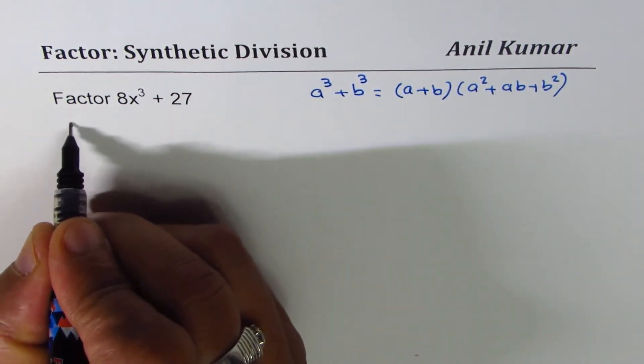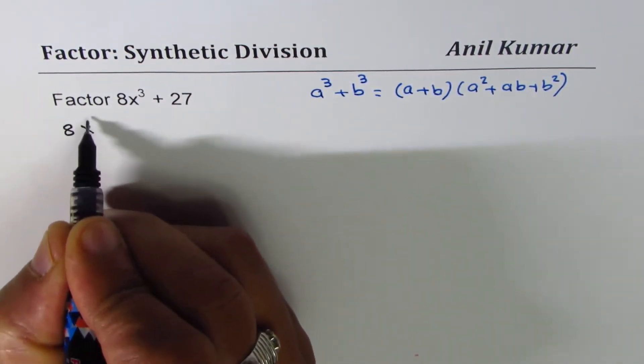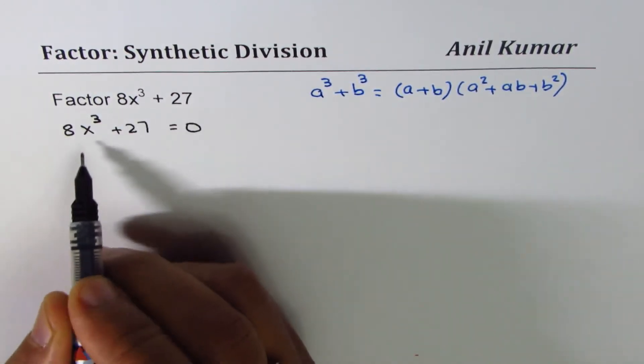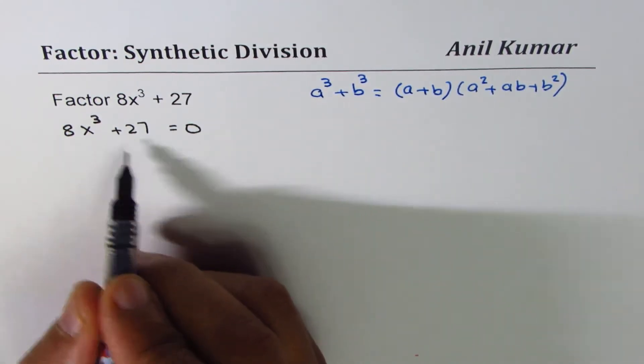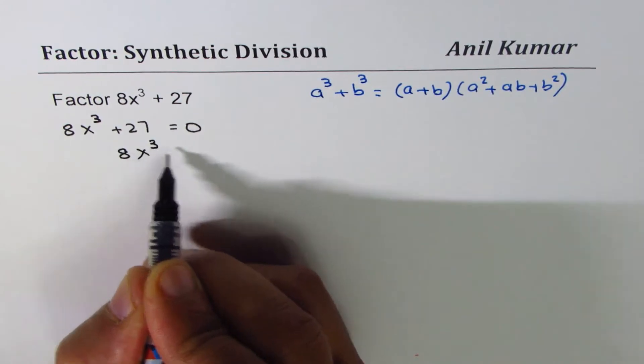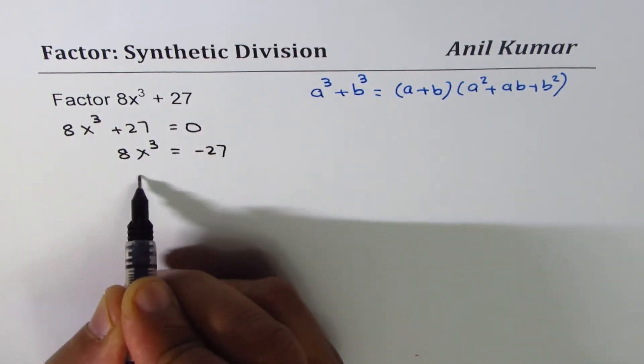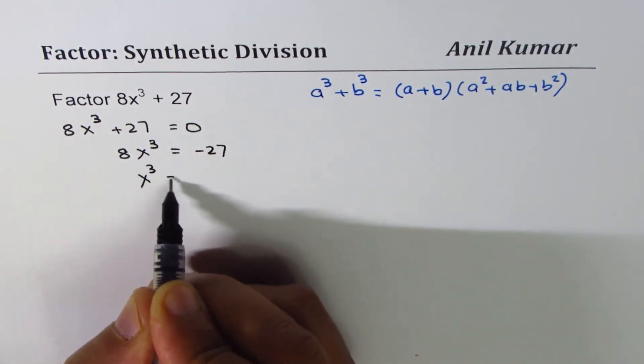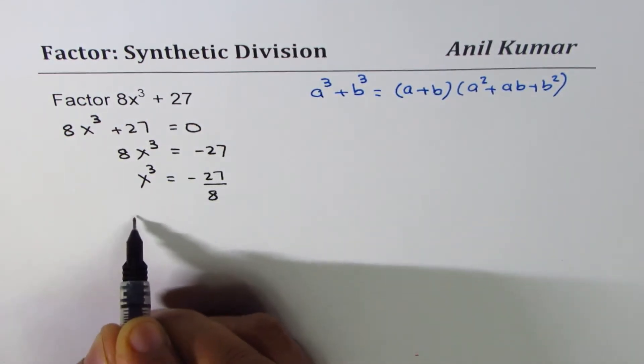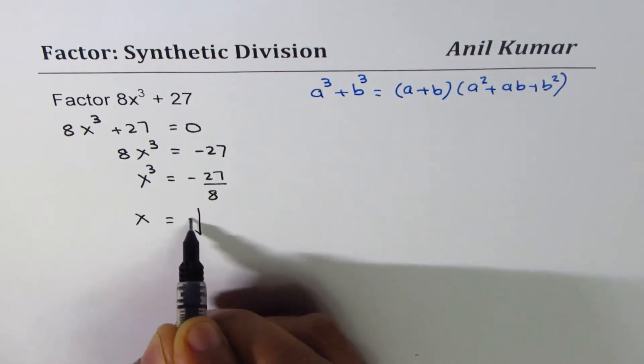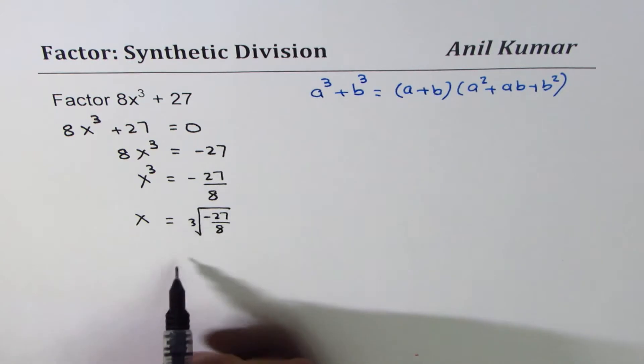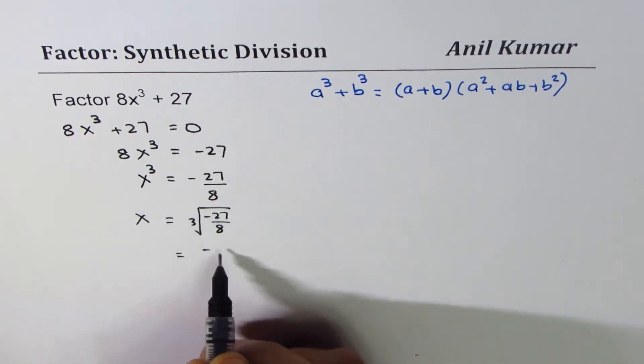Since this is 8x³ + 27, we can equate it to 0. So we can write 8x³ + 27 = 0 and find the first factor. Rearranging, we get 8x³ = -27, x³ = -27/8. So x is the cube root of -27/8.